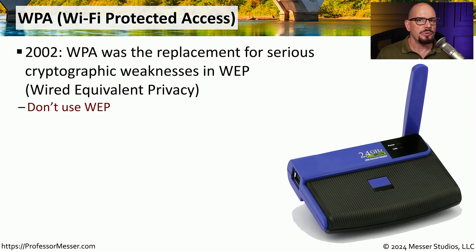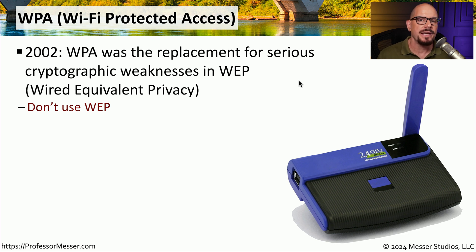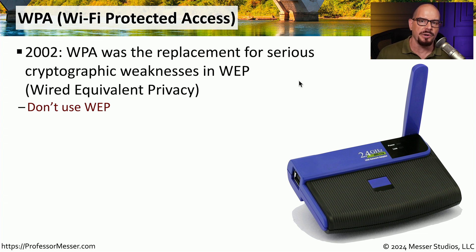One of the first encryption types on wireless networks is a method known as Wired Equivalent Privacy, or WEP. Unfortunately, WEP was discovered to have some significant cryptographic vulnerabilities, so we needed to very quickly replace WEP with something that was much more secure.